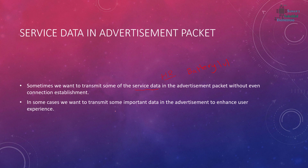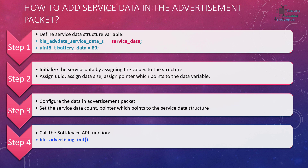In some cases we want to transmit some important data to enhance user experience, or if you have a specific application that needs to transmit services data in the advertisement packet without a connection establishment, then you can do it this way. So how do we add service data in the advertisement packet?